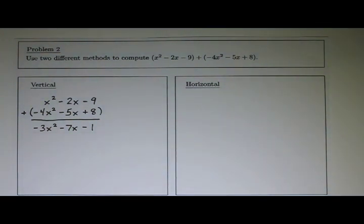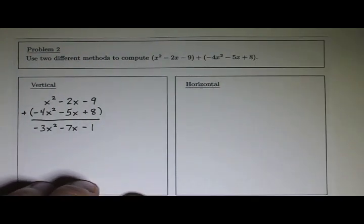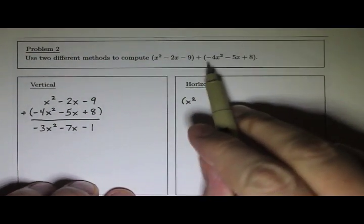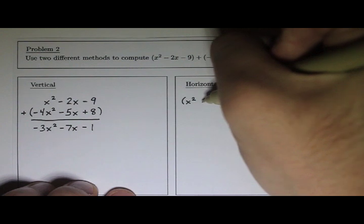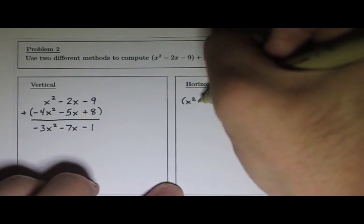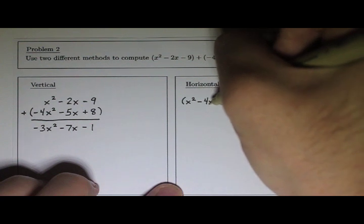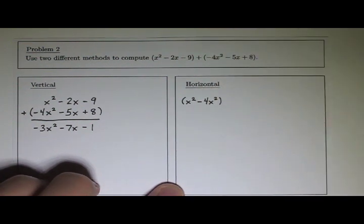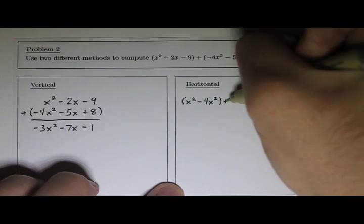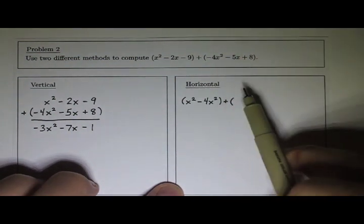Let's try the horizontal method. I should get the same thing. Now I'm going to group like terms. I'm going to group the x squared terms together: an x squared from the first one and a negative 4x squared from the second one. You could write plus negative 4x squared. I'm just going to write negative 4x squared to save some space. Since we're adding them, the next grouping is going to be the x terms.